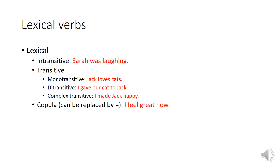Some verbs are transitive, which means there is an object — something is transferred through the lexical verb to the object. For example: 'Jack loves cats.' Jack is the subject, 'loves' is the predicator. Jack loves what? He loves cats, so 'cats' is the direct object. This means the verb 'love' is monotransitive, because there's only one object — 'mono' means one.